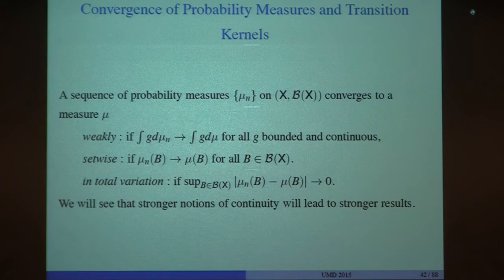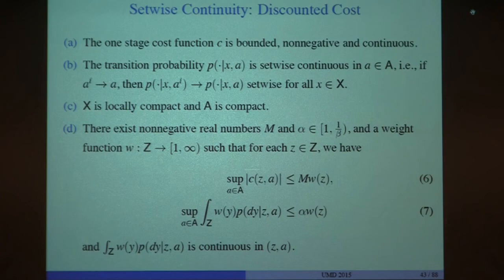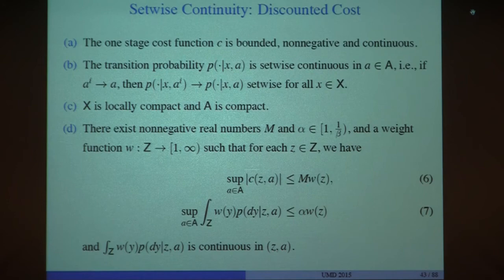The remaining part of the talk will involve many assumptions. These assumptions serve two purposes: to ensure our Markov chain has an invariant distribution, and to ensure the invariant distributions of the finite model and infinite model satisfy sufficient regularity and are close to each other. These conditions are nonetheless satisfied in many practical applications.